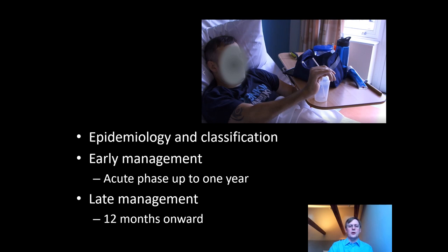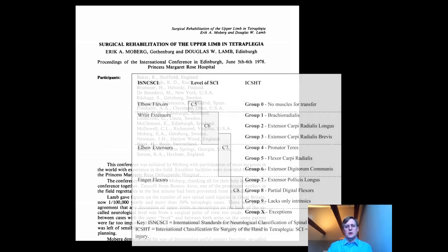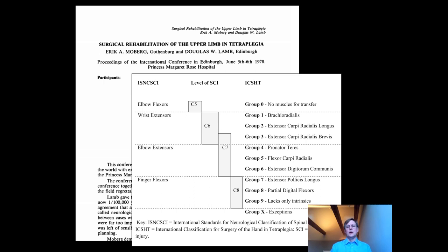Moving on to epidemiology and classification. We'll start with classification, which is pertinent today as the system we use was described in 1973 at a meeting in Edinburgh led by Eric Moberg — the father of reconstructive surgery from Sweden — and Douglas Lamb based in Edinburgh. They published it in this paper, and here's a summary which on the face of it looks a little long-winded — not the usual ABCDE — however it's really just the number of muscles you have that are of adequate strength to use as tendon transfers below the elbow, and the order is repeatable and predictable.